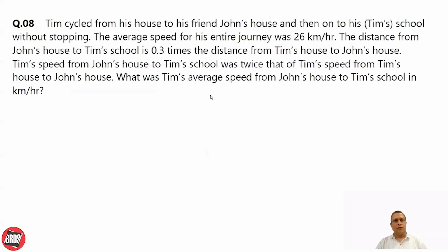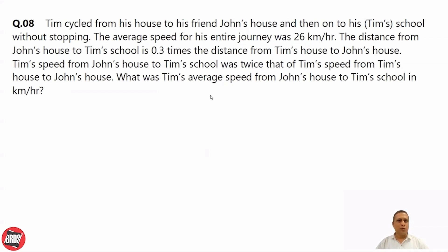Tim cycles from his house to his friend John's house and then onto his school without stopping. The average speed for his entire journey was 26 km per hour. The distance from John's house to Tim's school is 0.3 times the distance from Tim's house to John's house. Tim's speed from John's house to school is twice his speed from his house to John's house.